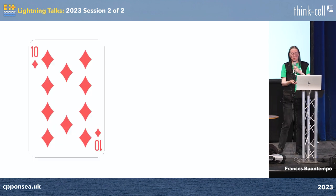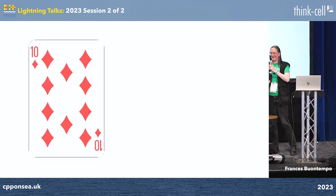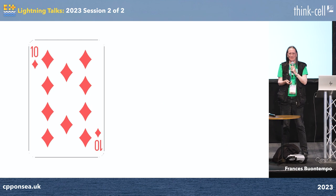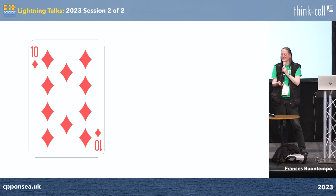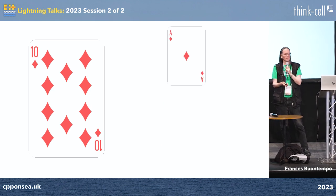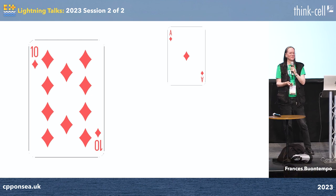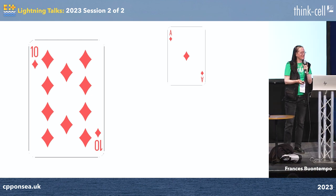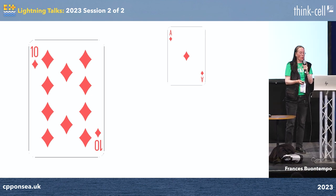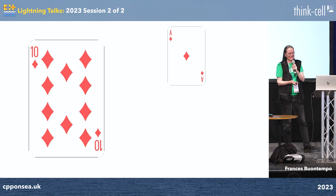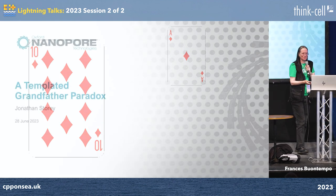Jonathan is lined up. Ten of diamonds again — higher or lower this time. Ace is high, ace was higher.